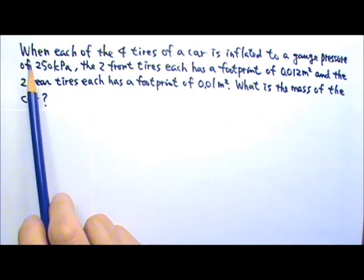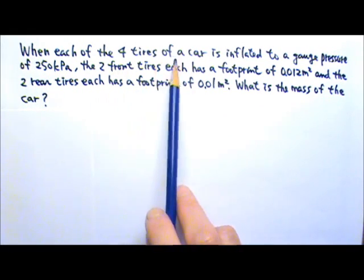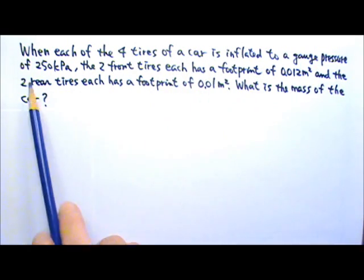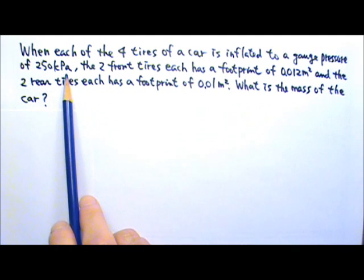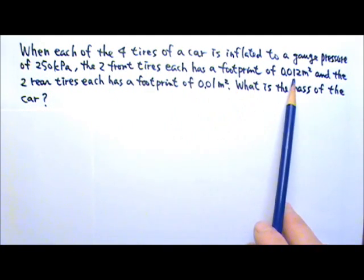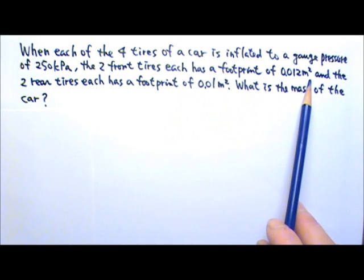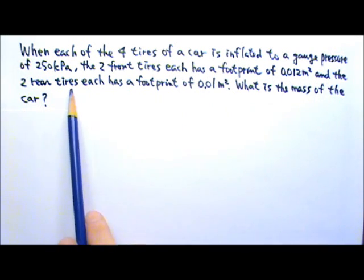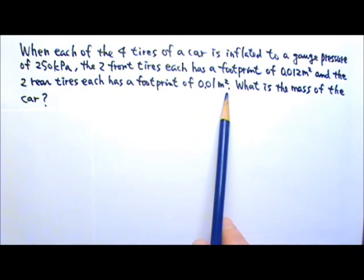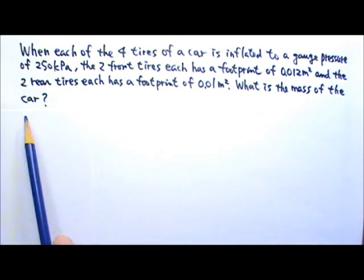Now let's try this problem. When each of the four tires of a car is inflated to a gauge pressure of 250 kilopascals, the two front tires each has a footprint of 0.012 meters squared, and the two rear tires each has a footprint of 0.01 meters squared. What is the mass of the car?